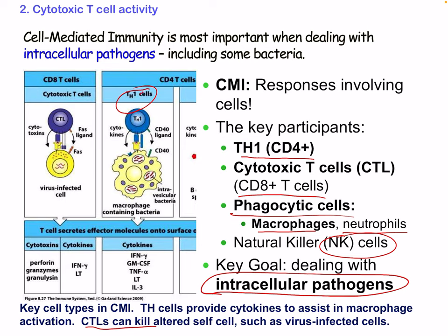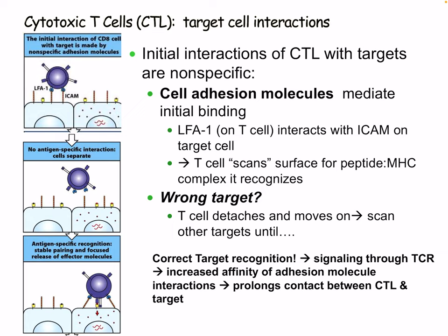T helper cells provide cytokines to assist macrophage activation, and CTLs can kill altered self-cells such as virus-infected cells. The Th1 cell releases cytokines with co-stimulatory signal binding as well as a T cell receptor. CD8 T cells work at the same time. Innate interactions of the CTL with targets are initially nonspecific — cell adhesion molecules mediate initial binding, including integrins and ICAMs. LFA-1 on the T cell interacts with ICAM on the target cell. The T cell scans the surface for a peptide-MHC complex it recognizes. If it's the wrong target, the T cell will detach, move on, and scan until it finds a match.